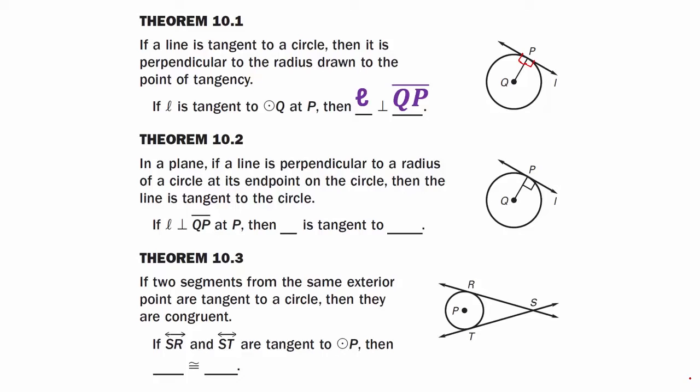Theorem 10.2: in a plane, if a line is perpendicular to a radius of a circle at its endpoint on the circle, then the line is tangent to the circle. If line L is perpendicular to line segment QP at P, then line L is tangent to circle Q. Theorem 10.3: if two segments from the same exterior point are tangent to a circle, then they are congruent. If SR and ST are tangent to circle P, then SR is congruent to ST, meaning SR equals ST.